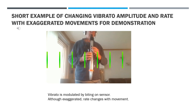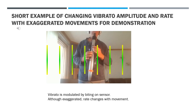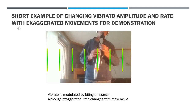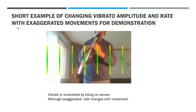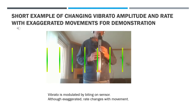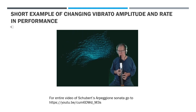Here are some short examples of changing vibrato amplitude and rate. The first is a simple note starting without vibrato — amplitude increases by biting down on the mouthpiece. By waving the Aerophone to the left and to the right, the rate goes faster and slower. The center position tends to hold onto the faster rate from the last swing of the instrument. The second example is taken from my YouTube recording of Schubert's Arpeggione Cello Sonata. Notice how the vibrato amplitude varies and the rate slows down as the phrase ends — the goal here is to be more subtle and support phrasing.